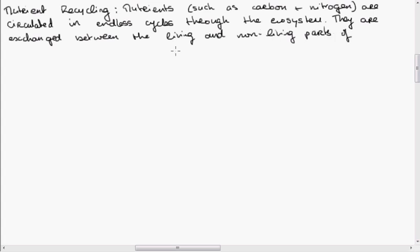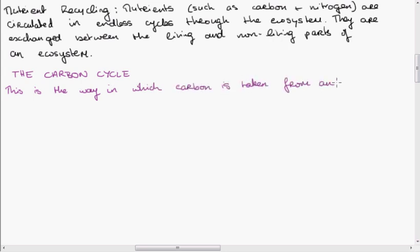And let's look at the carbon cycle in more detail. So the carbon cycle, this is the way in which carbon is taken from and added to the environment by living things.